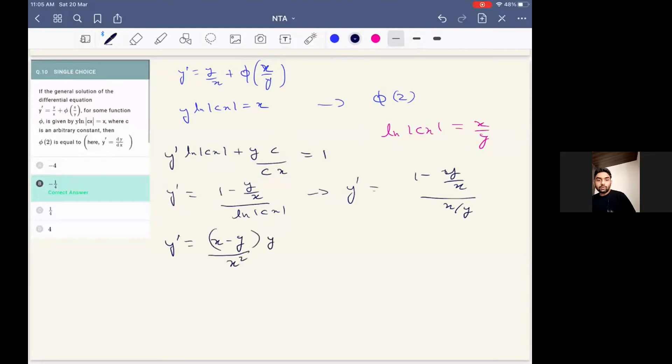Now we know that this y dash is also equal to y by x plus phi of x by y. So after doing cross multiplication, or we can rather rewrite the entire thing as one minus y by x upon xy.